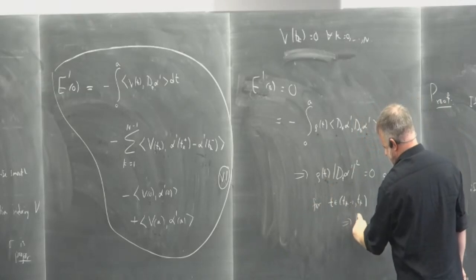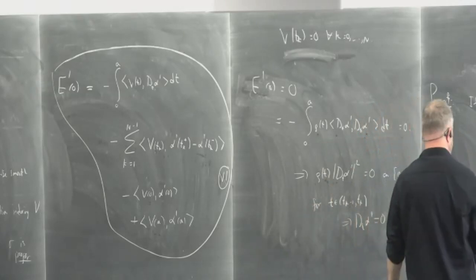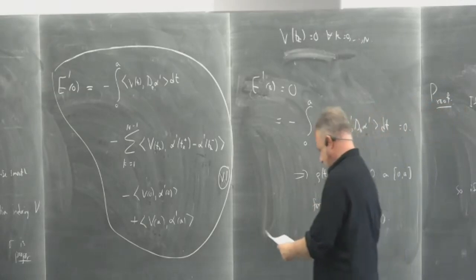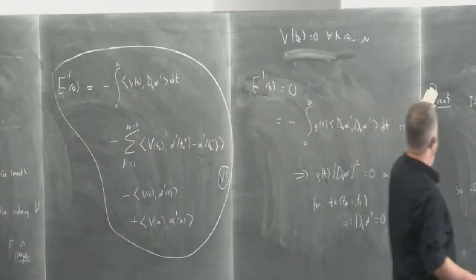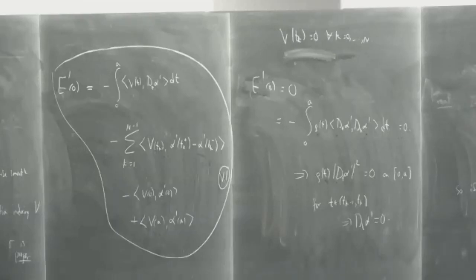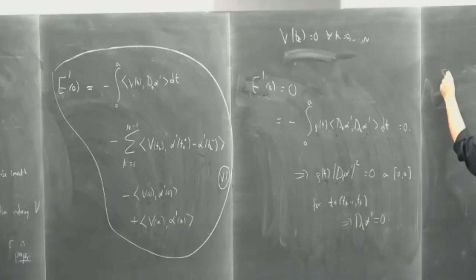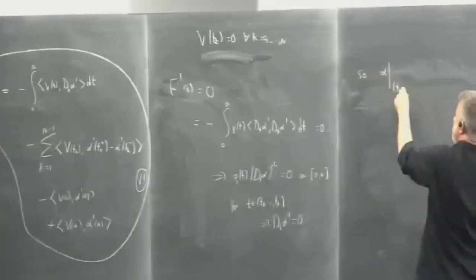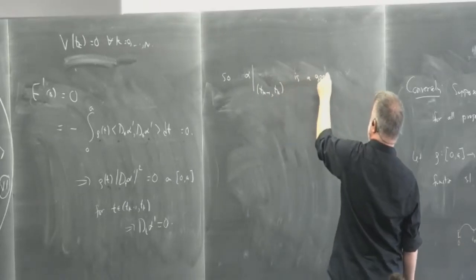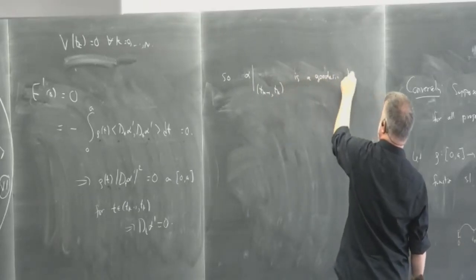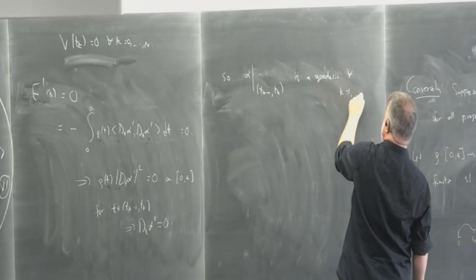This function rho times the norm squared of D_T alpha prime is non-negative, continuous, and its integral is zero. Therefore rho of t times the norm squared of D_T alpha prime equals zero on zero to A. For t in the open interval T_{k-1} to T_k, rho is positive, so D_T alpha prime equals zero. This means alpha restricted to each T_{k-1} to T_k satisfies the geodesic equation — alpha restricted to each open interval is a geodesic.